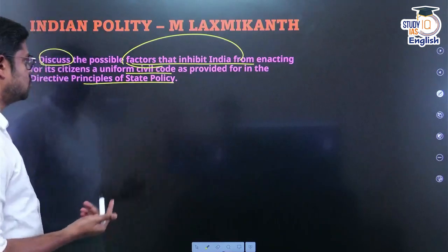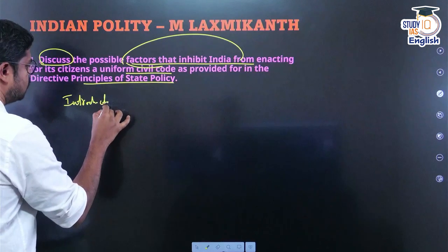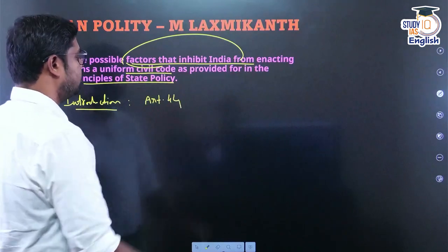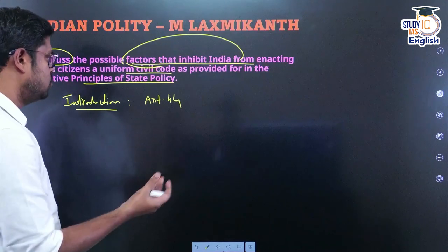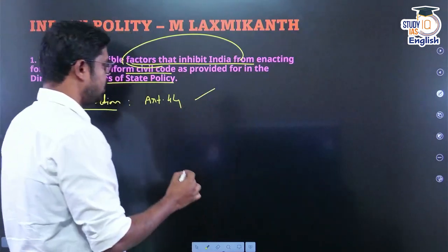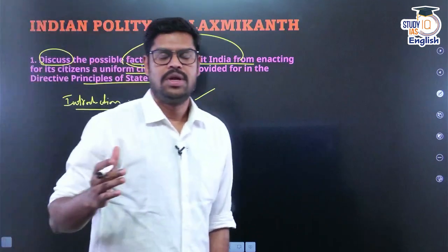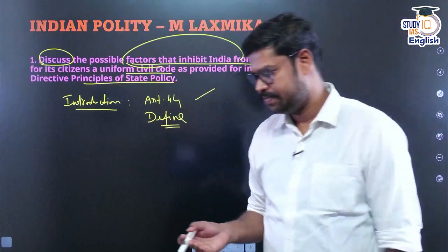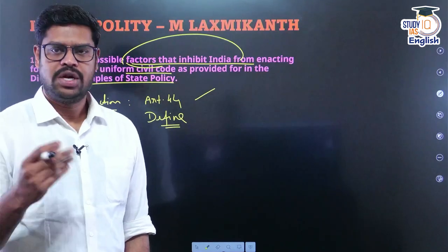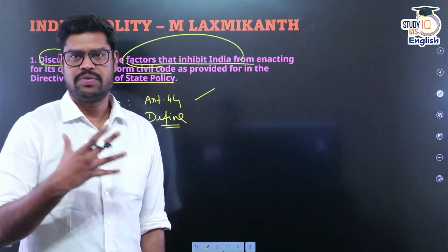You can start with explaining what a Uniform Civil Code is in your introduction. Since the question mentions Directive Principles, you can use Article 44 as an enrichment — not many students will include it. Define the UCC as a code that ensures uniform laws across religions for personal matters like marriage, divorce, and inheritance of property — something we currently do not have. You can also mention that Goa is the only state which has a Uniform Civil Code.